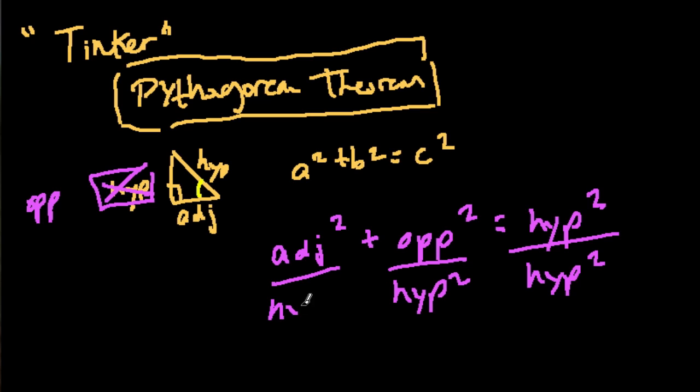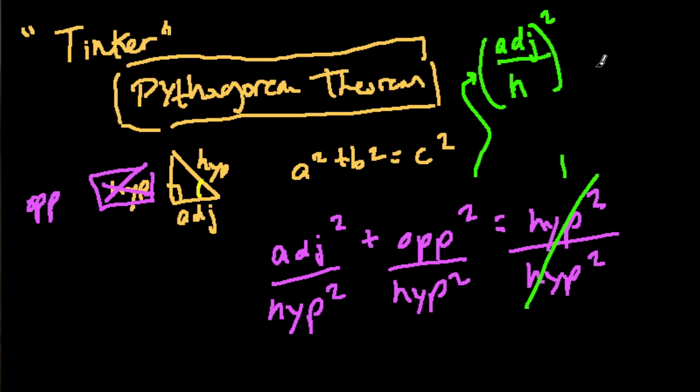Well, the hypotenuse squared divided by itself, what's that? Well, that's just one, right? Something divided by itself is one. And we can rewrite these over here as the adjacent over—I'm going to write h for hypotenuse—squared like that, plus the opposite over the hypotenuse squared, that equals one.